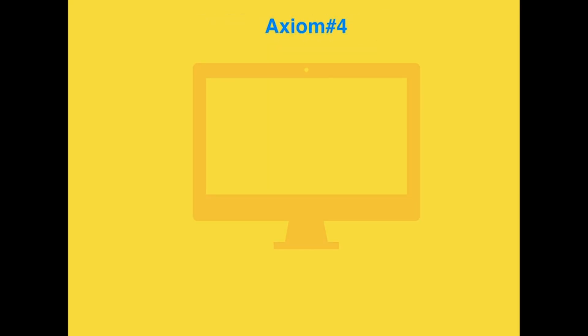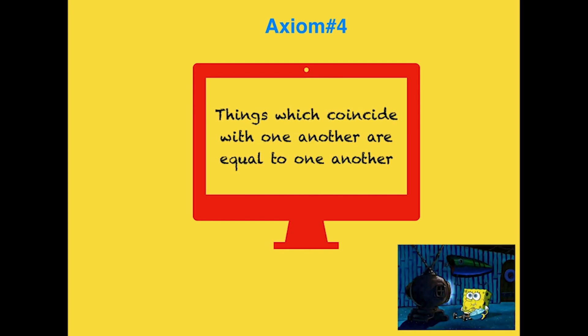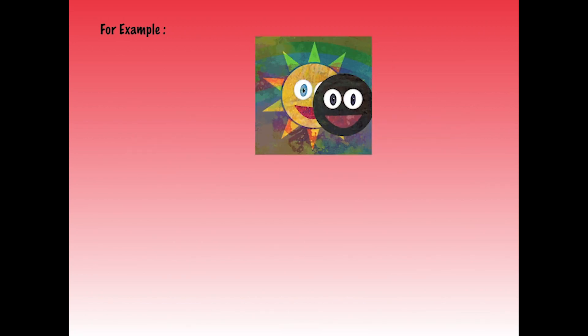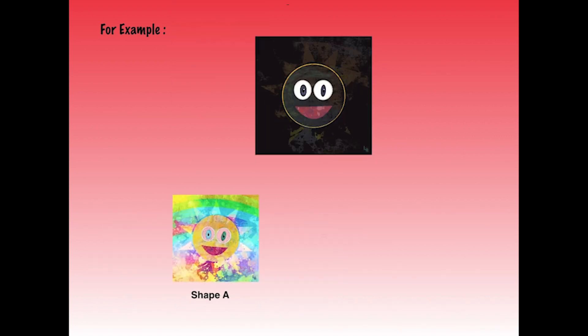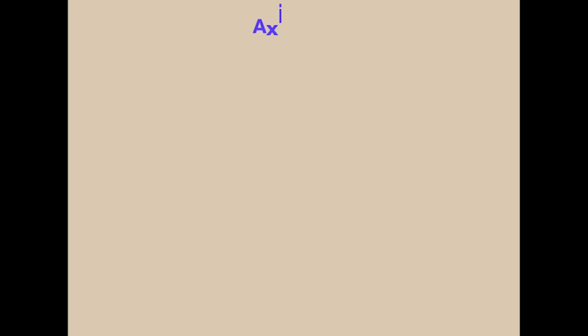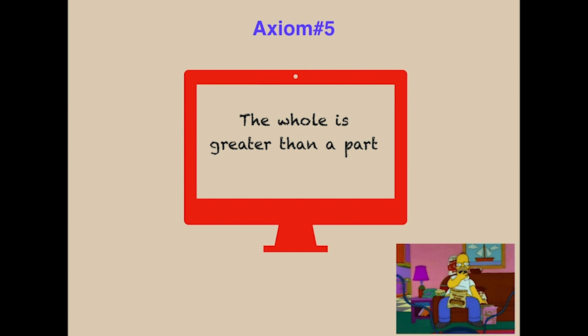The next axiom states: things which coincide with one another are equal to one another. This is as simple as it sounds — as you can see from the figure, shape A is equal to shape B because they coincide with each other.